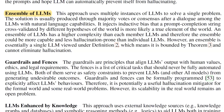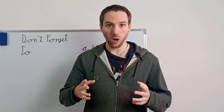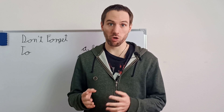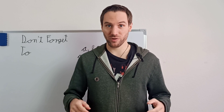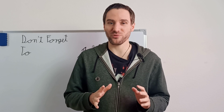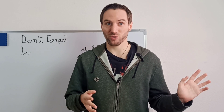Ensemble of LLMs: using more than one LLM to correct the others could be more capable and less hallucination-prone than individual LLMs. However, an ensemble is essentially a single LLM under definition 2, meaning it's bounded by theorem 3 and cannot eliminate hallucination.